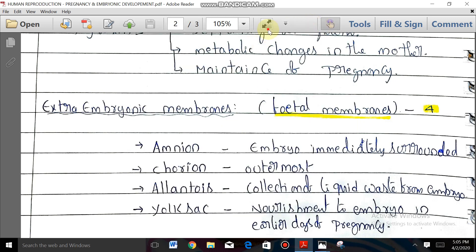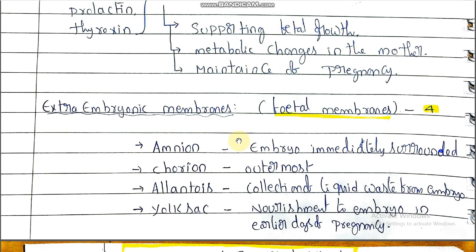There are four extra-embryonic membranes: amnion, chorion, allantois, and yolk sac. The embryo is immediately surrounded by the membrane called amnion. Chorion is the outermost membrane of the fetus or embryo. The function of amnion and chorion is protection to the embryo and developing fetus. The function of allantois is collection of liquid waste from the embryo.